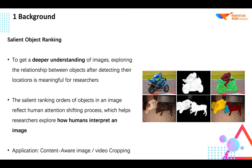The salient ranking orders of objects in an image reflect the human attention-shifting process, which helps researchers explore how humans interpret an image. Substantial downstream applications are in huge demand of SOR, with representative ones such as content-aware image cropping, image parsing, and image captioning. These cannot be well solved by employing current object detection or salient object detection methods.